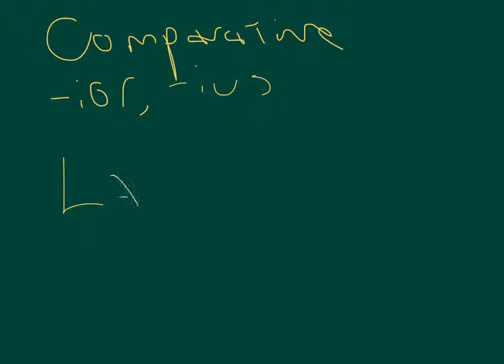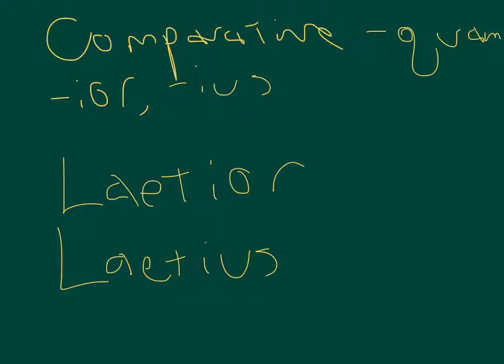So if we were to take happy, laetus, and we were to erase, we would find the stem. So laet, and then we would add laetior for the masculine and feminine, and laetius for the neuter. So I am happier than someone else. Because oftentimes you will see a quam with comparatives, and that means than.